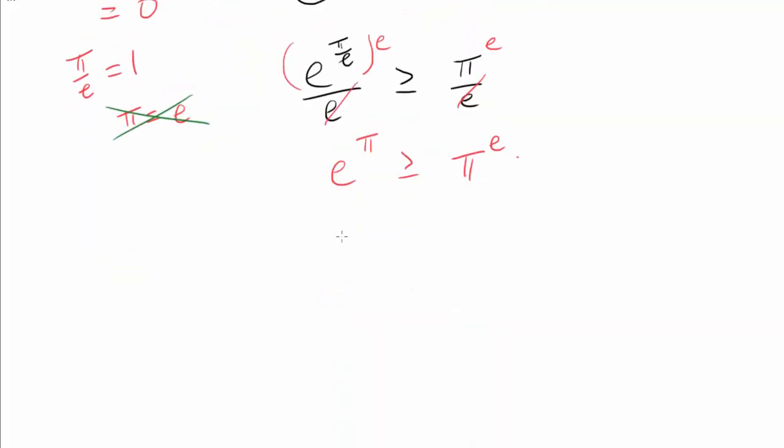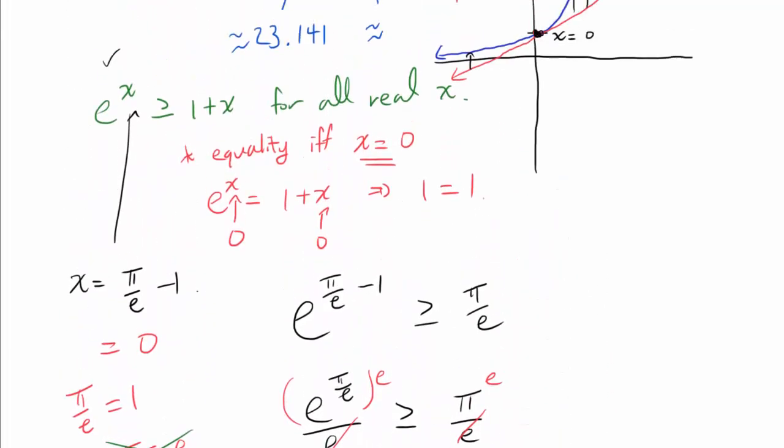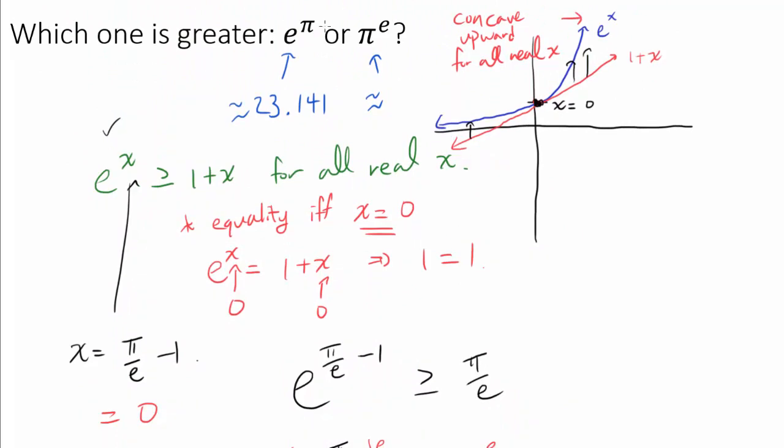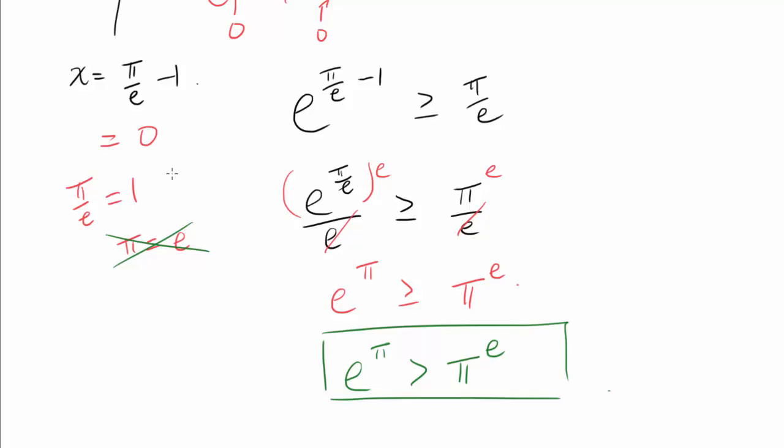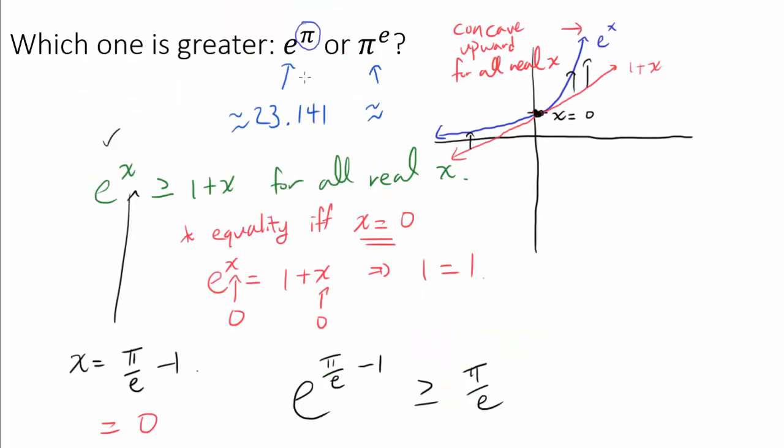So we can conclude that e to the pi is greater than pi to the e. Now, you may have realized something interesting. We did not use anything special about pi. That is, we did not use any properties of pi inherent in the number pi. And really, the only property of pi, I guess, that we used was that pi and e do not have the same value. So it seems like we can repeat the same proof for even for the values other than pi.